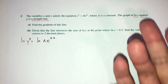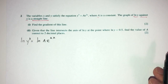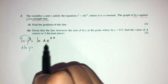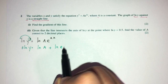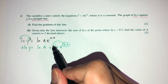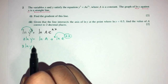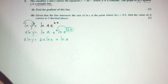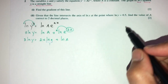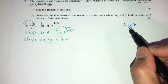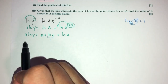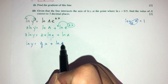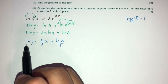Now simplify — the goal is to get ln y on one side and x on the other. Send the powers over: you have 3 ln of y. On the right, break it down: that would be ln of A plus ln of e to the x. We can simplify further: 3 ln of y equals 2x ln of e plus ln of A. Since ln e equals 1, that simplifies. Dividing by 3 everywhere: ln y equals (2/3)x plus ln(A)/3. This is the equation of ln y against x.